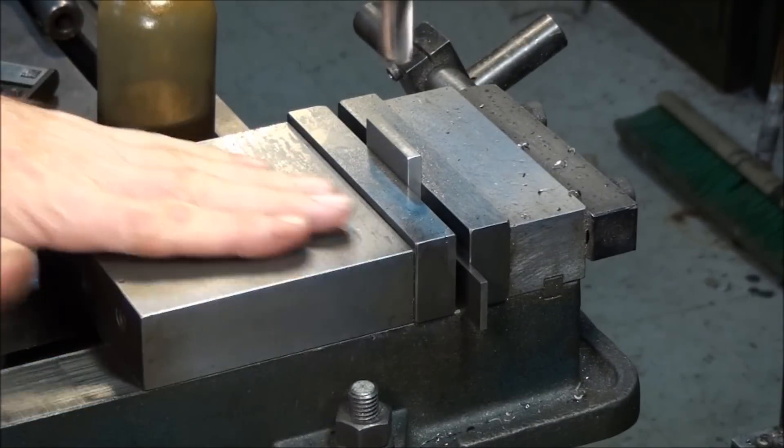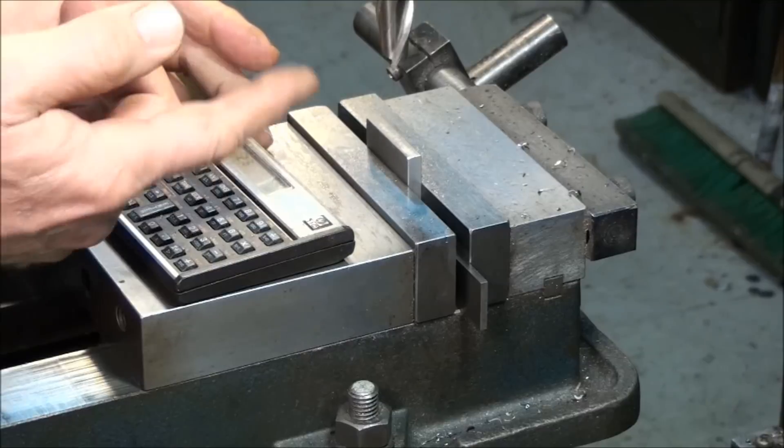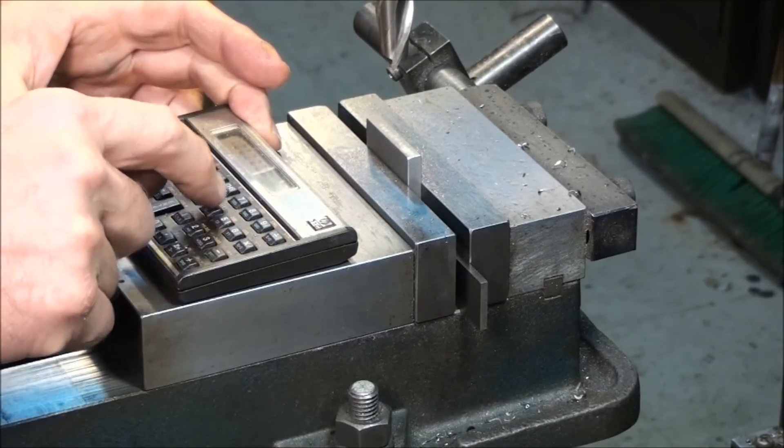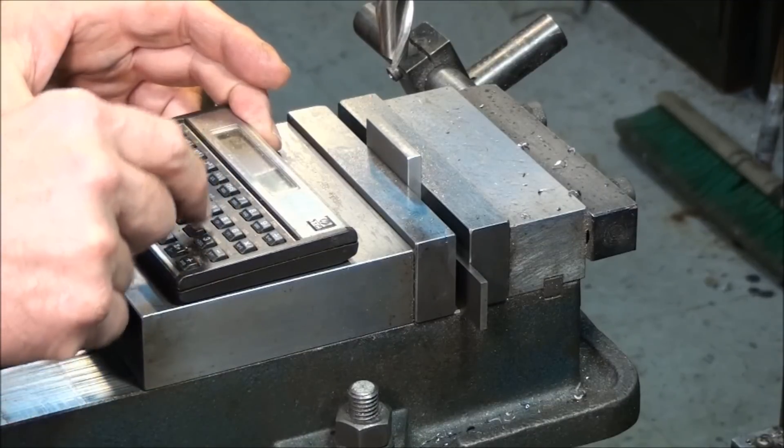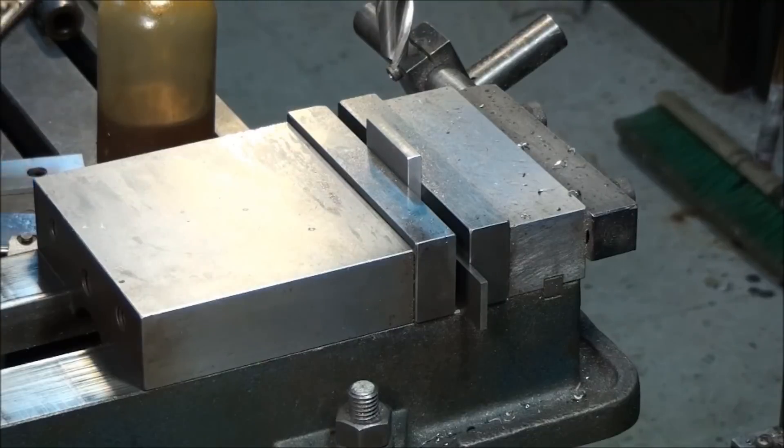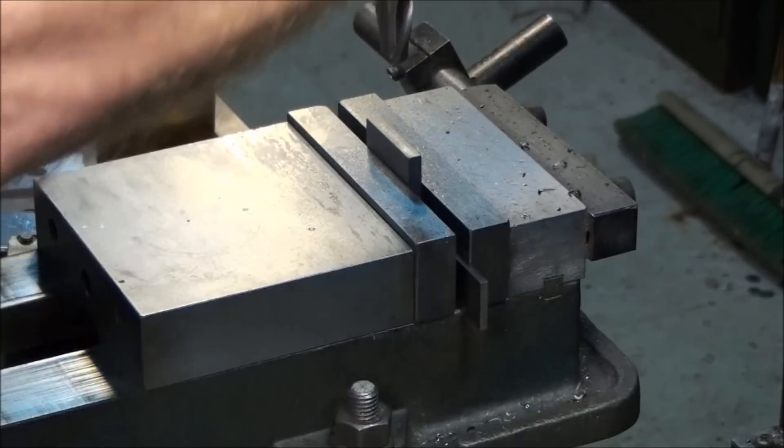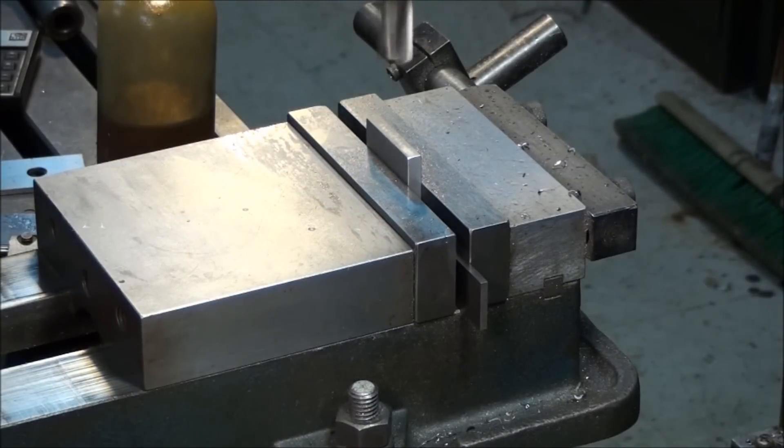Diameter is 5/8, so let's figure out the proper RPM here. Four times the cutting speed. Cutting speed of steel is 100. Four times is 400 divided by 0.625. Our RPM should be about 640. Is that right? Yep, about 640. Okay, right above there.